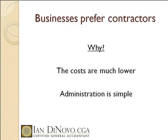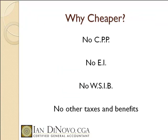With contractors, administration is quite simple. You don't have to worry about payroll or filing T4 slips — you simply pay your contractor's invoice and that's it. It's much simpler and cheaper: there's no CPP, no EI, no WSIB, and no other taxes or benefits for the business. If you research these amounts, they can be quite substantial — adding a minimum of around 8% over and above the hourly wage, and potentially up to 15% depending on your industry.